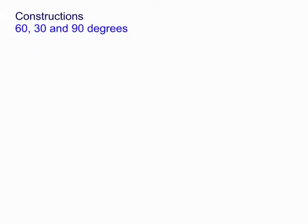Welcome to Maths with Bob. Today we're looking at some constructions. First of all, we're going to look at 30, 60 and 90 degrees. So let's get started.